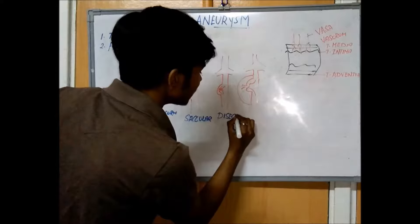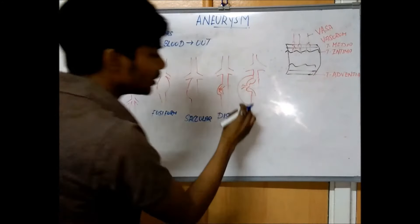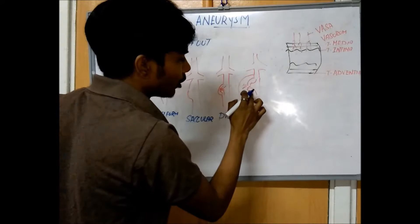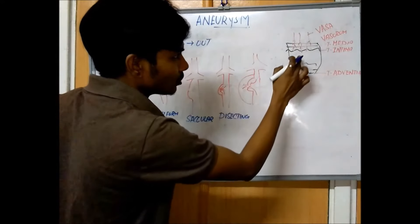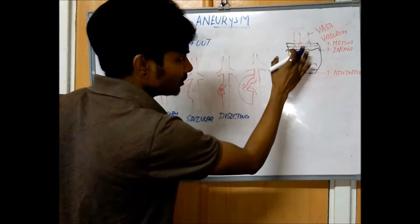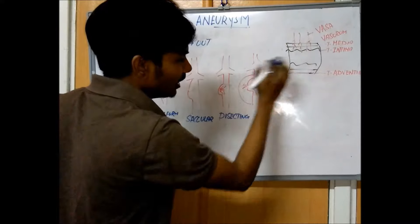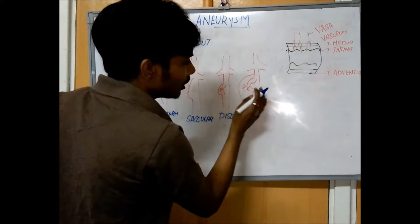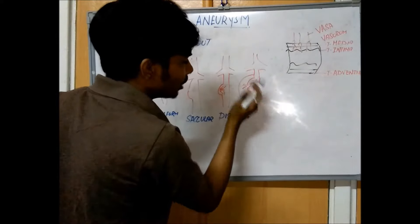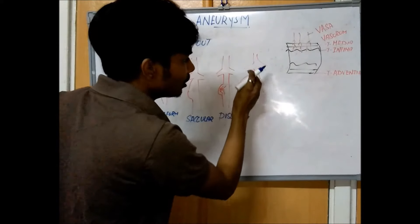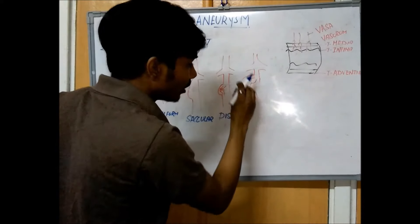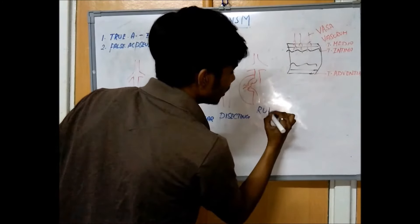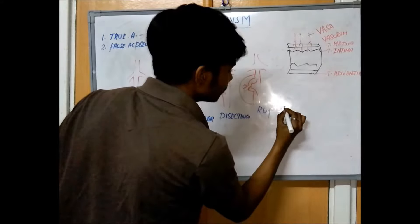When there is weakening of the wall of the blood vessel, there is a rupture of all three layers, causing blood to come from the artery to the outside, surrounded by tissue, which forms a blood clot or thrombus formation. This is called rupture aneurysm.